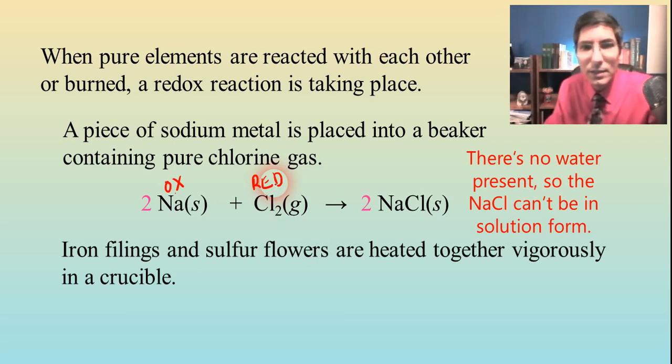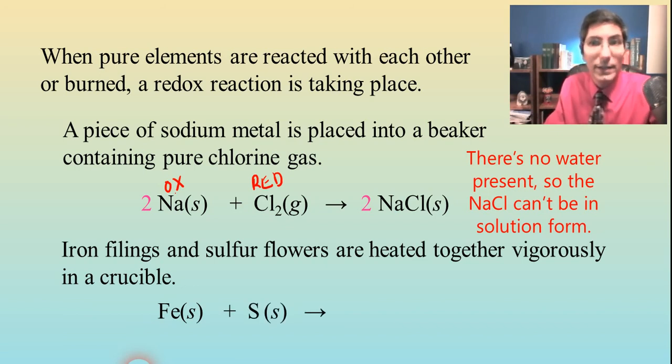How about iron filings and sulfur flowers are heated together vigorously in a crucible? Well, iron filings, that's just plain old Fe. Iron and sulfur flowers. We can write that as S. If you write it as S8, that's okay as well. But for simplicity's sake, I'll just write it as S in this example. And so they're going to get together. The most common form of that is just FeS. And that's balanced already.